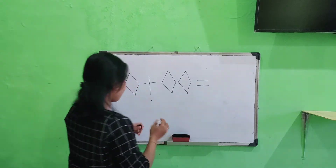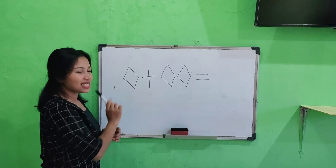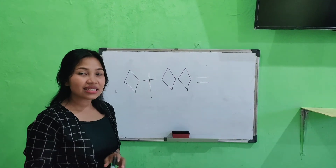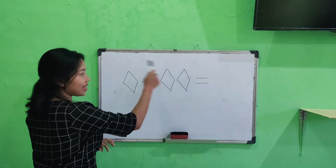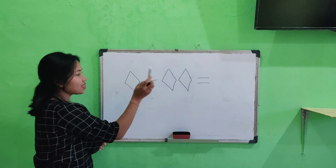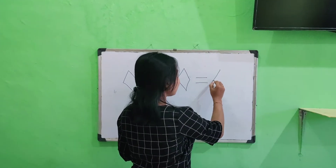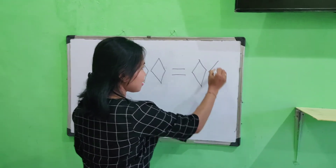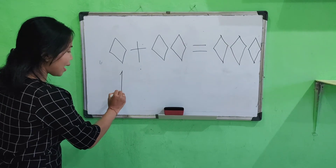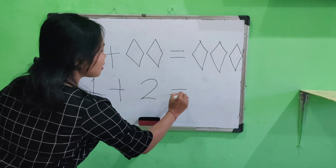Okay, next. Look at here. Here, Nisema has one diamond. And here, Nisema has two diamond more. How many diamond? Can you count it? Let's count together. One, two, three. Three diamond. So, one plus two equal three.